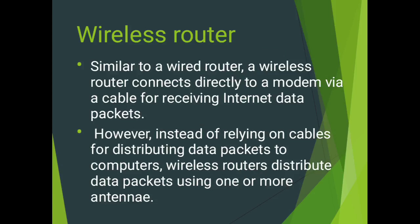The second type is the wireless router. Similar to a wired router, a wireless router connects directly to a modem via cable for receiving internet data packets. However, instead of relying on cables, a wireless router distributes data packets to computers using one or more antennas.